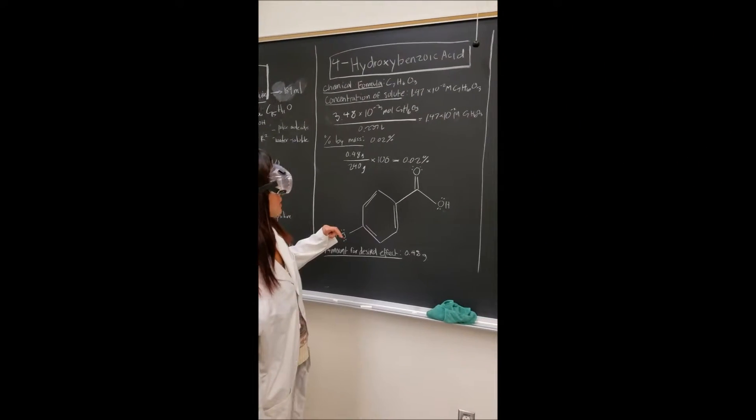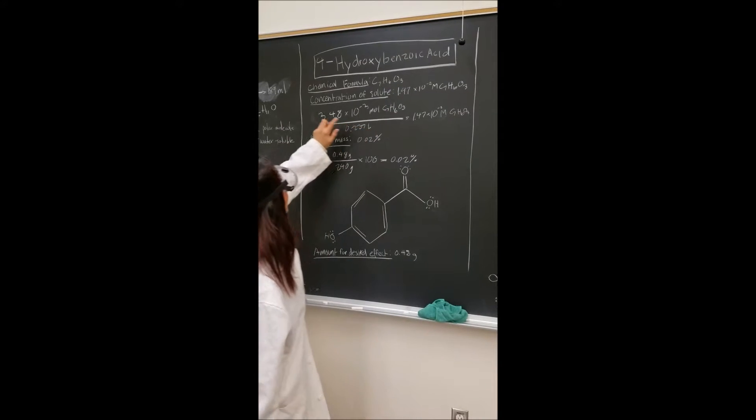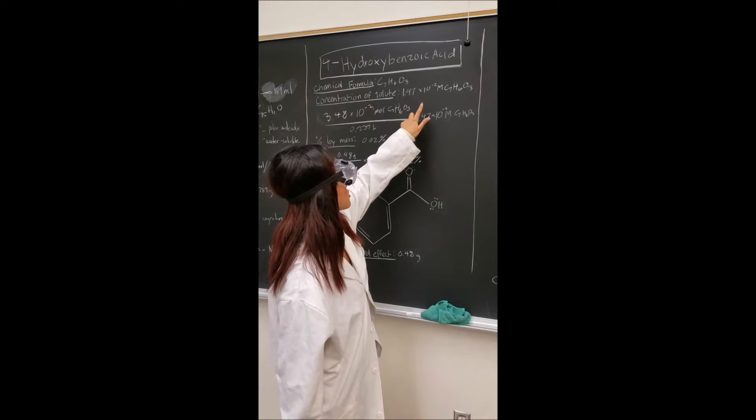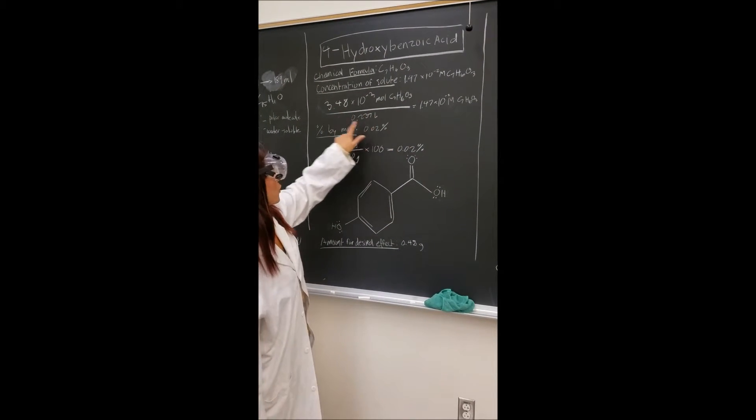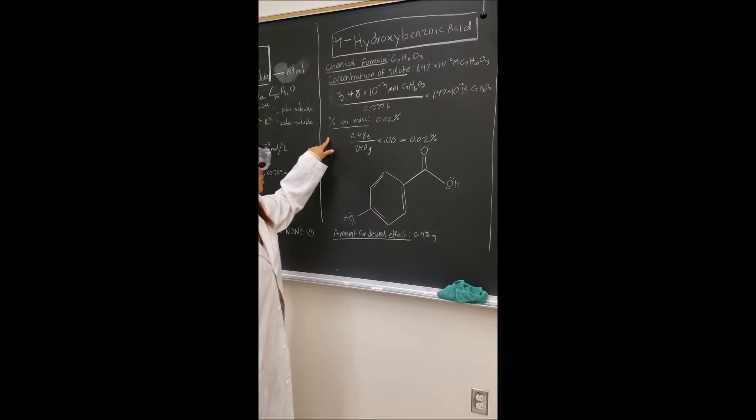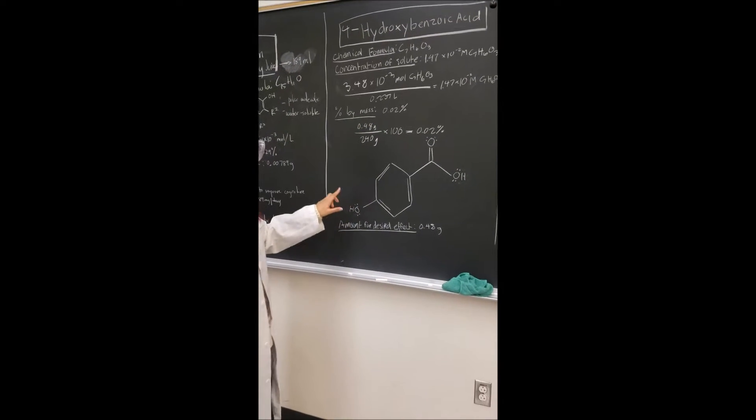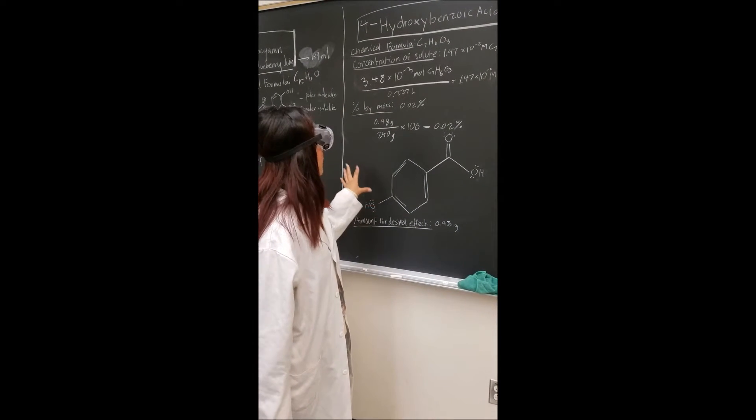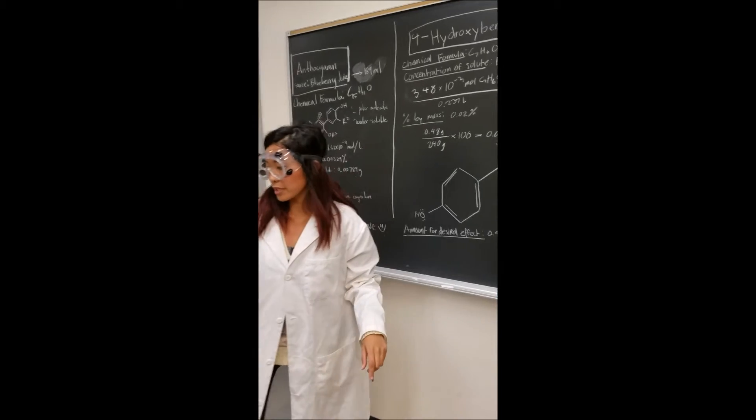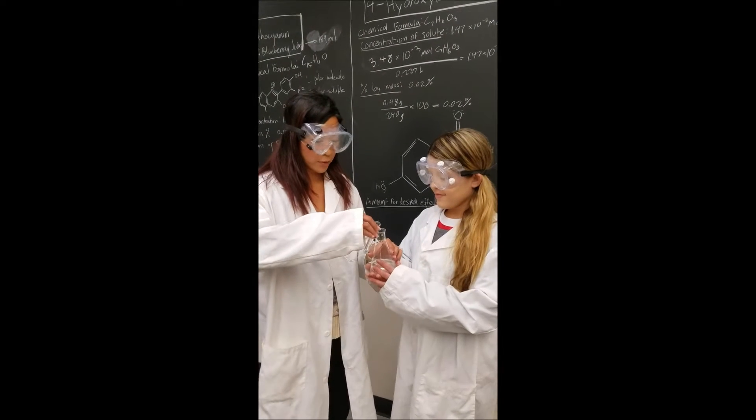The next ingredient that we're going to use is called hydroxybenzoic acid with the chemical formula of C7H6O3, and the concentration of this solute is going to be 1.47 times 10 to the negative 2, and this right here is showing us how we came up with the concentration. The percent by mass is going to be 0.02%, and this again is how we came up with this answer. This is the chemical Lewis structure of that chemical, and the amount for desired effect is 0.48 grams. So in here we already measured our hydroxybenzoic acid, and Brie is going to hold this, and I will add 0.48 grams of that.